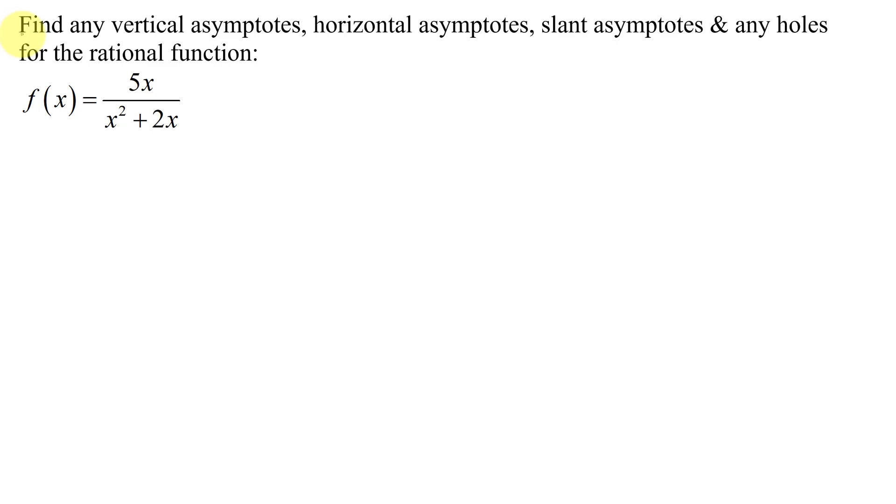In this example, I need to find any vertical asymptotes, horizontal asymptotes, slant asymptotes, and any holes for the rational function f(x) = 5x/(x² + 2x).